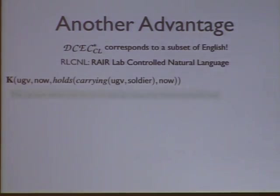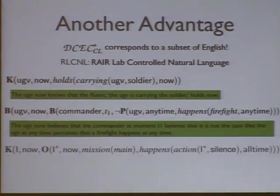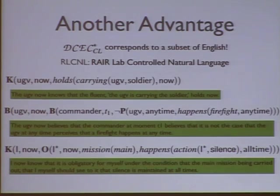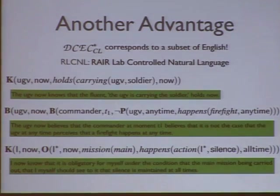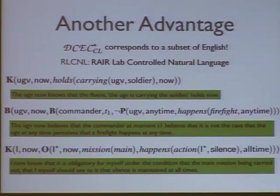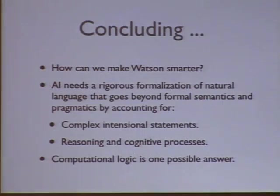Another thing we're trying to do with the DCEC is build a subset of English for natural language processing purposes. This particular project deals with reasoning for UGVs, or unmanned ground vehicles. They have to reason about things like what they're carrying, and more interestingly, they have to reason about obligation — deontic things, what their responsibility is in a particular situation. We want to show not only that the system can perform reasoning, but that it can provide a proof of its reasoning, so it doesn't just perform a course of action without justifying itself.